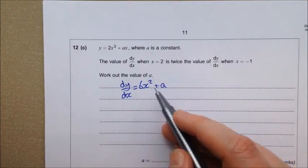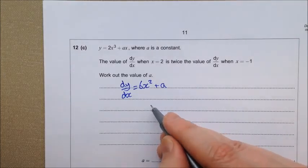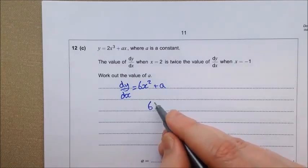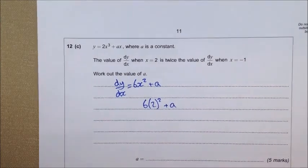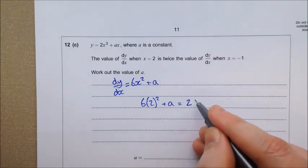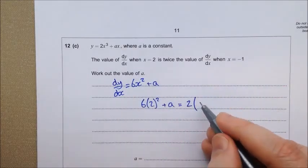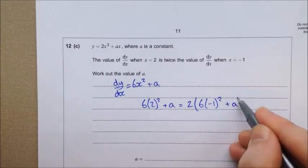Now, the value of dy dx when x is 2 is twice the value of dy dx when x is negative 1. So let's write this out in algebra. So when x is 2, that's 6 lots of 2 squared plus a, it's twice the value of dy dx when x is negative 1. So that's 6 lots of negative 1 squared plus a.